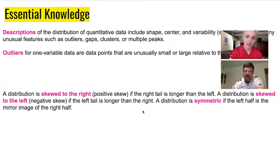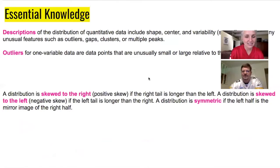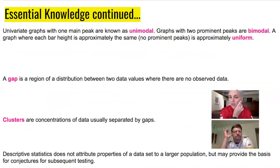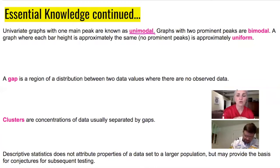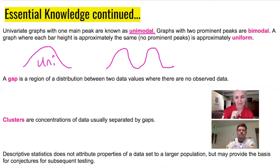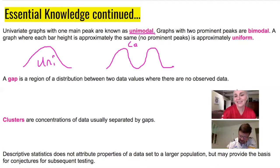Most graphs are unimodal — all three shapes we just saw are unimodal because they have one peak or one hump. Uni meaning one. There are also graphs that are multimodal. Bimodal means it has two humps — like a camel. Bi meaning two.